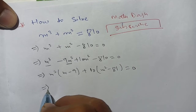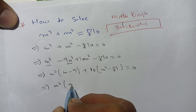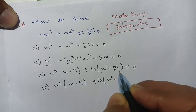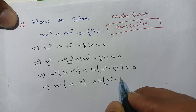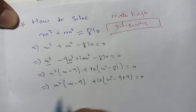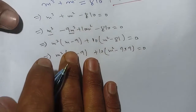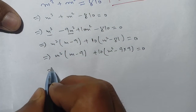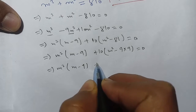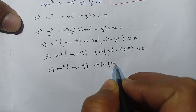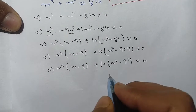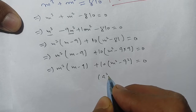Our next term becomes m²(m - 9) + 10(m² - 81) = 0. Now 81 can be written as 9 × 9, so m² - 81 = m² - 9² = 0.